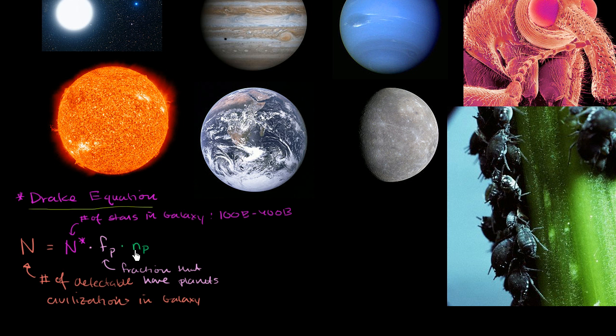And we still don't know exactly what this means. But this means average number. So given that there's a solar system with planets, what's the average number of planets that are capable of sustaining life?